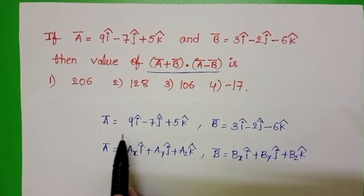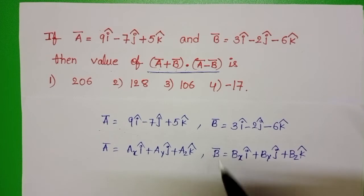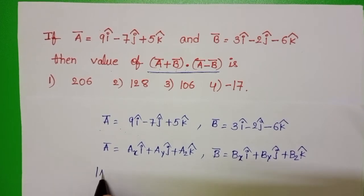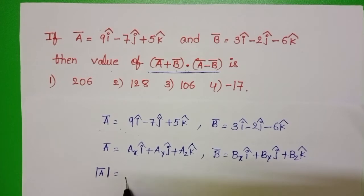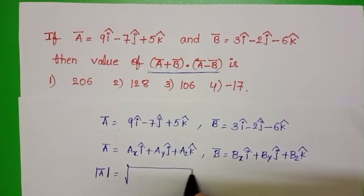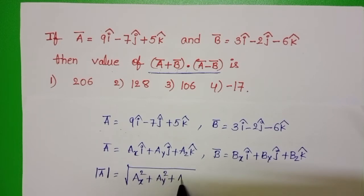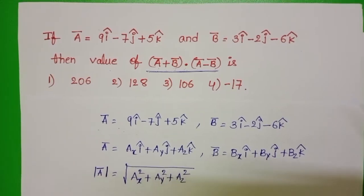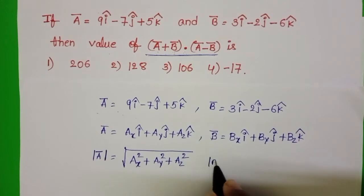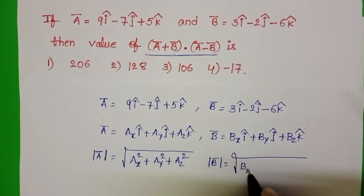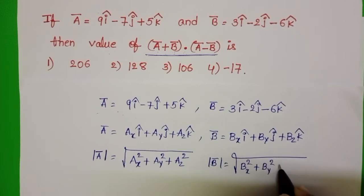First, find out the magnitude of the given vectors. The formula to find out the magnitude: |ā| equals the square root of ax² plus ay² plus az². And |b̄| equals the square root of bx² plus by² plus bz².